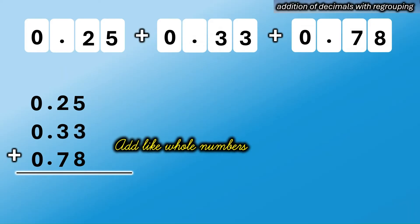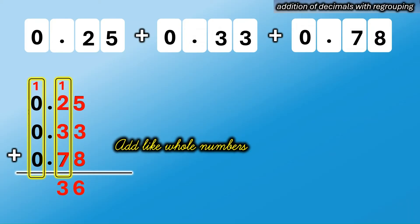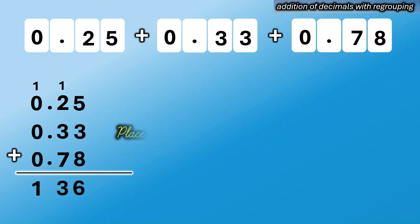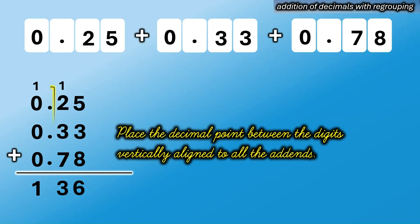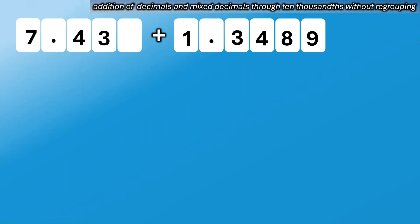Now let's add like whole numbers, starting from the rightmost digit going to the leftmost digit. 5 plus 3 plus 8 equals 16 — regroup: bring down 6, carry 1 to the next column. 1 plus 2 equals 3, plus 3 equals 6, plus 7 equals 13 — regroup: bring down 3, carry 1. 1 plus 0 equals 1, plus 0 equals 1 — bring down 1. Lastly, place the decimal point vertically aligned to all the addends. The sum is 1 and 36 hundredths.